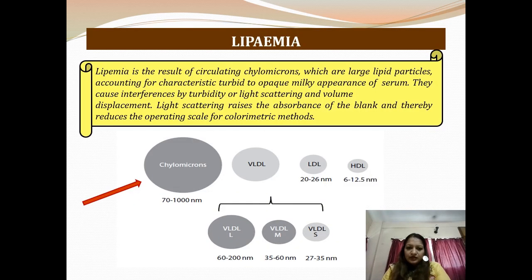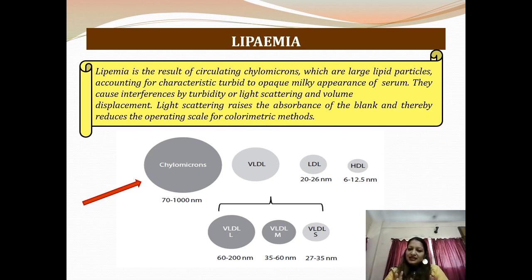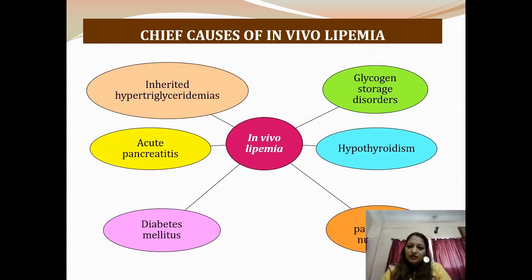Lipemia is classically defined as a result of circulating chylomicrons — large lipid particles — accounting for the characteristic turbid to opaque milky appearance of serum. They cause interference by turbidity or light scattering and volume displacement. Light scattering raises the absorbance of the blank, thereby reducing the operating scale for colorimetric methods. The largest particles, chylomicrons with a diameter of 70 to 1000 nanometers, cause maximum interference. In vivo lipemia can be seen in inherited hypertriglyceridemias, acute pancreatitis, uncontrolled diabetes mellitus, patients receiving parenteral nutrition, hypothyroidism, and glycogen storage disorders.